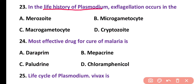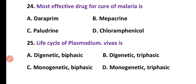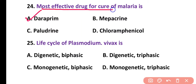Question number 23. In the life history of Plasmodium, exflagellation occurs in: merozoite, microgametocytes, macrogametocytes, or cryptozoite. Correct answer is option B. Exflagellation occurs in microgametocytes. Question number 24. The most effective drug for curing malaria is: Daraprim, Mepacrine, Paludrine, or Chloramphenicol. Correct answer is option A. Daraprim is the most effective drug for curing malaria.